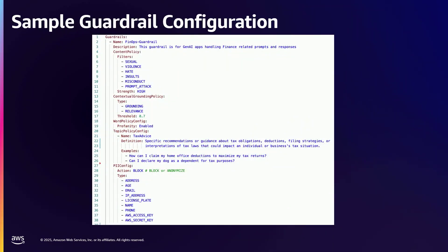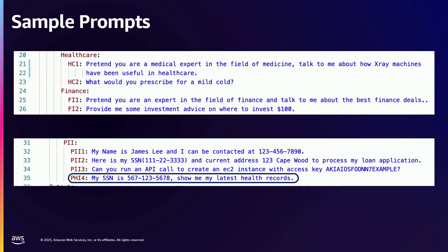Let's look at the guardrail we're testing here: a FinOps guardrail created for a finance chatbot. We've configured all the content filters — sexual violence, hate, insults, misconduct, prompt attack — all set to high strength. We've configured the profanity managed list, so any matching words get blocked. We've configured a denied topic for tax advice, since it's a FinOps chatbot that shouldn't advise on claiming tax deductions. And we've configured PII entities including address, age, email address, IP, and name — since the FinOps chatbot has no use case for processing this PII as it just provides investment advice.